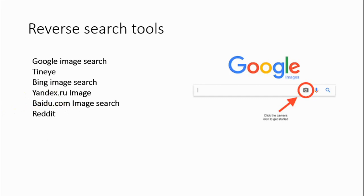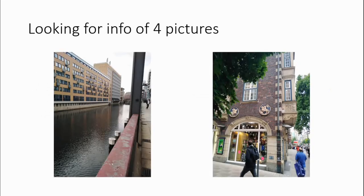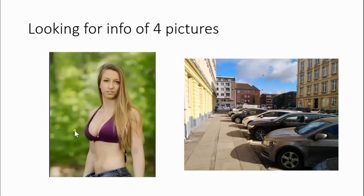I will show you how to analyze a picture and how you can use Reddit to get information. We're going to look at four pictures. With these pictures, we're going to try to locate where they come from. With one, we're going to try to find out how old the picture is, and with another, where it was taken.